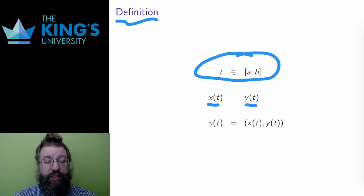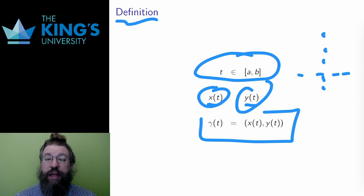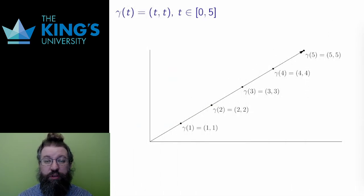x(t) is where the x-coordinate is at a moment in time, and likewise, y(t) is where the y-coordinate is. Then these are put together into a curve. The standard letter for curves is gamma. So γ(t) is the curve composed of the two coordinates, x(t) and y(t). And let me use an example to show how the curve is drawn.